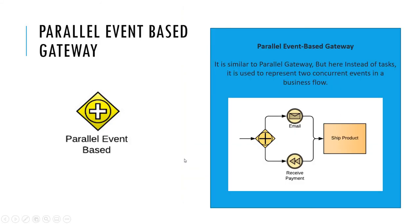Next is parallel event-based gateway. It is similar to a parallel gateway, but here instead of tasks, it is used to represent two concurrent events in the business flow.